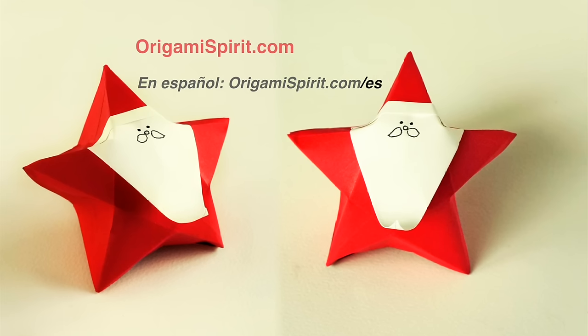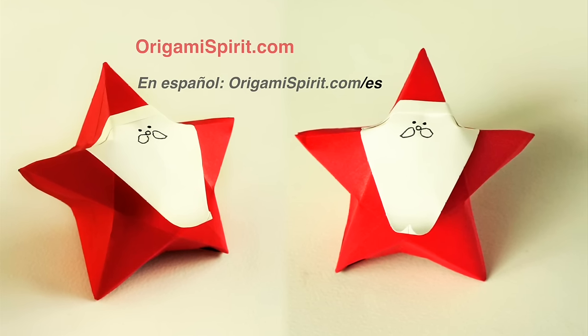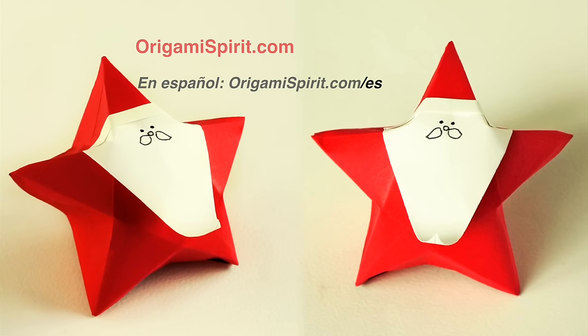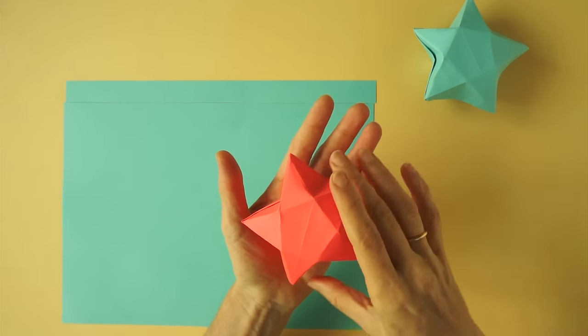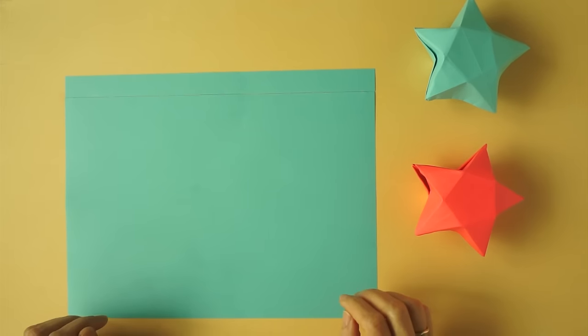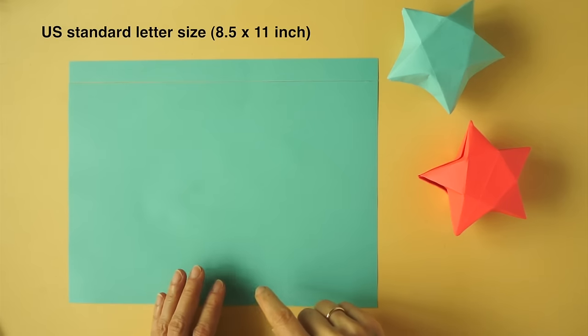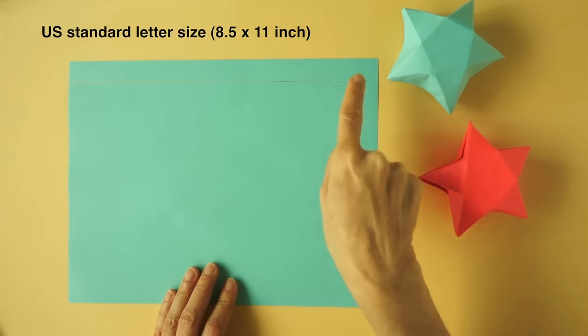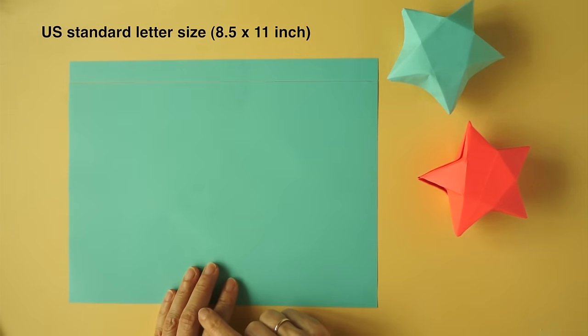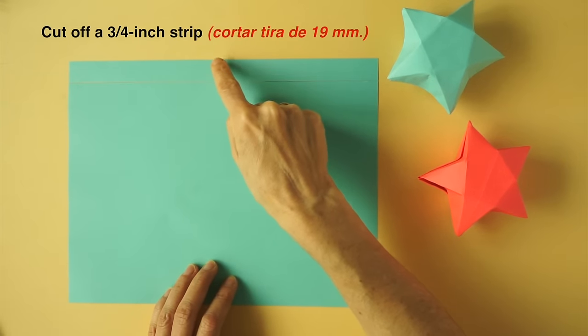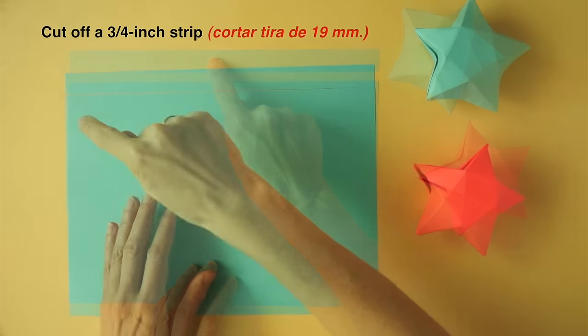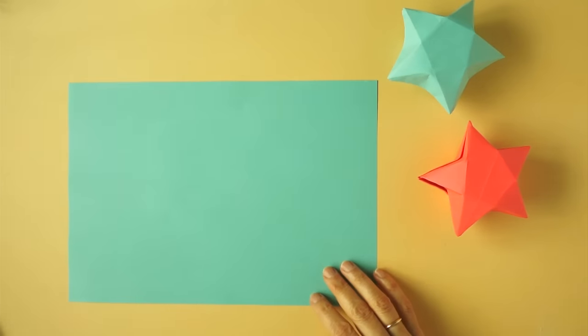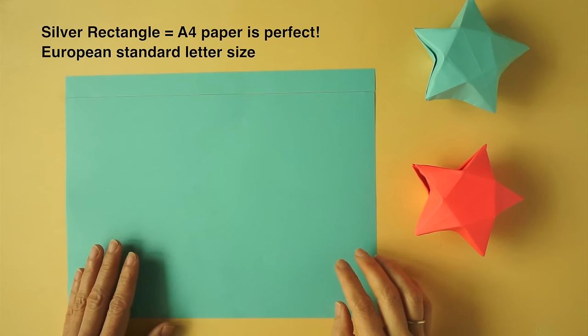For more ideas, visit our related blog post at OrigamiSpirit.com. To make a star this size, we need a sliver rectangle. If we have standard US 8.5 x 11 paper letter size, we can cut off a 3.25 inch strip or 19 mm. A4 paper is perfect, which is European letter size.